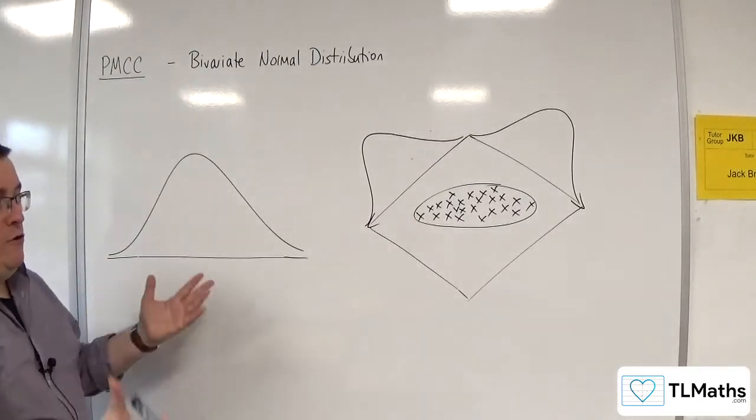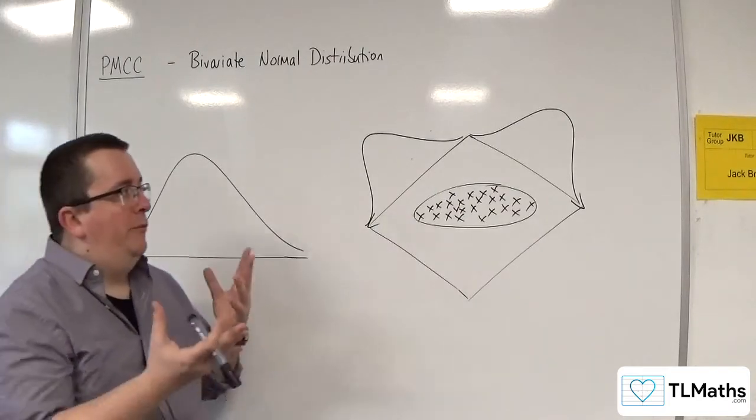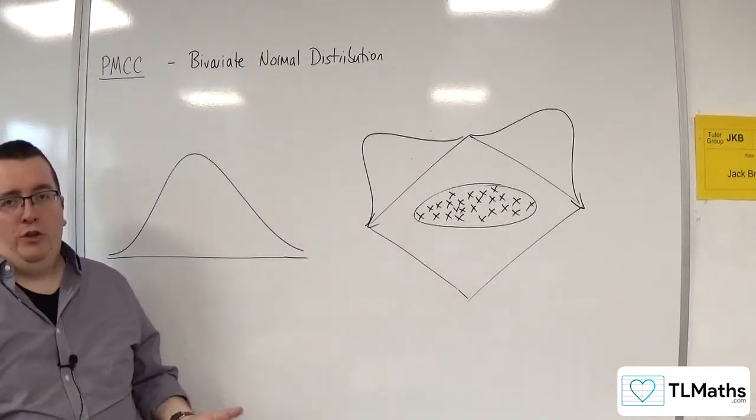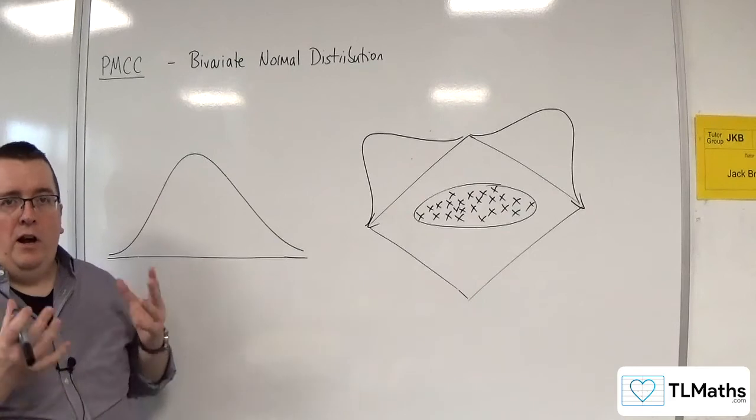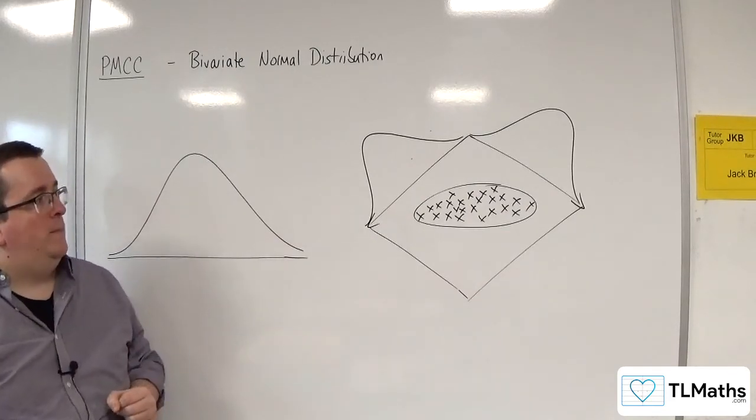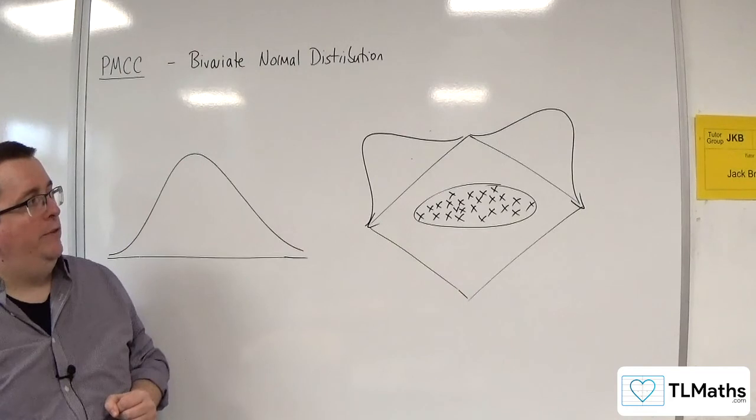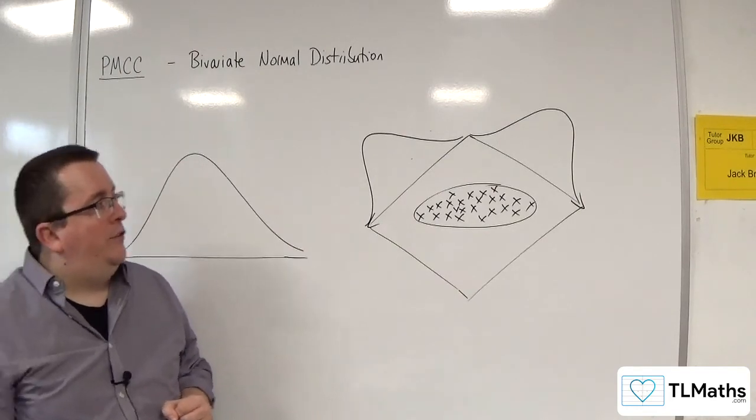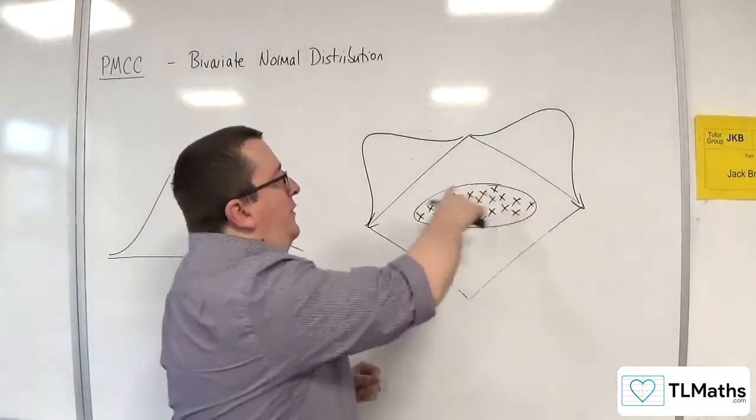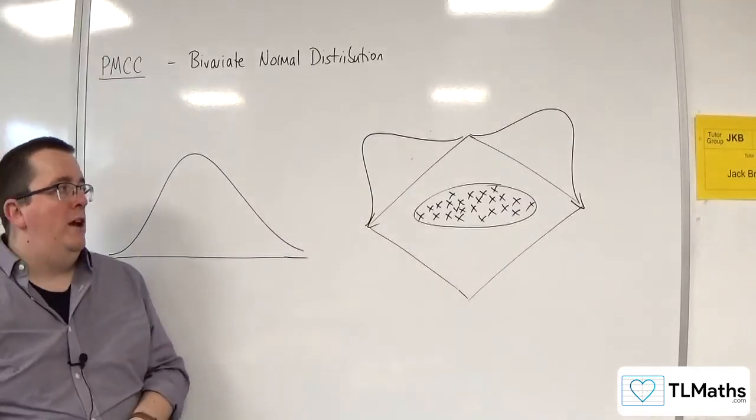The two variables are coming from themselves normal distributions and are random variables from that normal distribution. So that is the consequence that you get this elliptical shape appearing on your scatter graph.